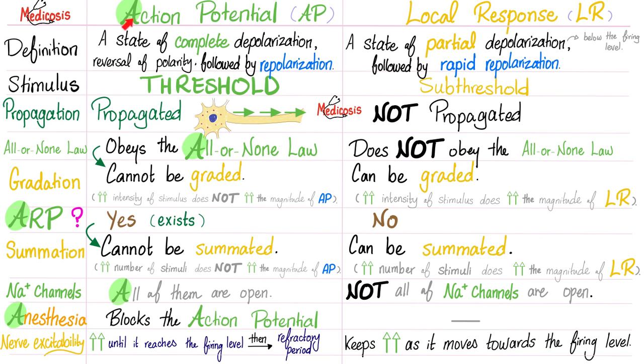Action potential versus local response. Action potential obeys the all or none law, therefore cannot be graded. Has an absolute refractory period, therefore cannot be summated. All of the sodium channels are open. Anesthesia will destroy your action potential. Contrast that with the local response. No all or none law, therefore can be graded. No absolute refractory period, therefore can be summated. Not all of the sodium channels are open. If you treat me with respect, I'll give you action potential that propagates. If you treat me with no respect, I'll give you a local response that does not propagate.